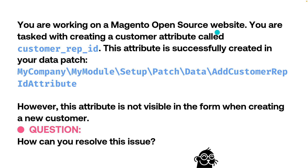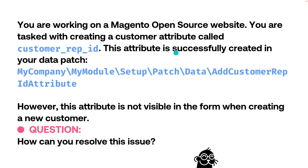You are working on a Magento open source website. I call out open source because you can create attributes in the admin panel on Commerce. However, you still shouldn't just create attributes in the admin panel if they're actually using code — so it could apply to Commerce as well. You are tasked with creating a customer attribute called customer_rep_id. This attribute is successfully created in your data patch — well done. However, it is not visible in the form when creating a new customer. How do you resolve this problem?